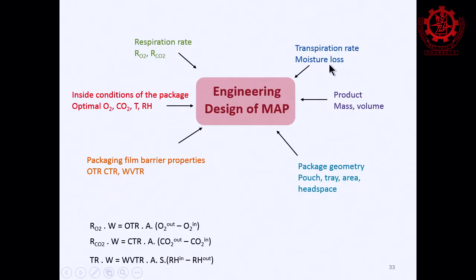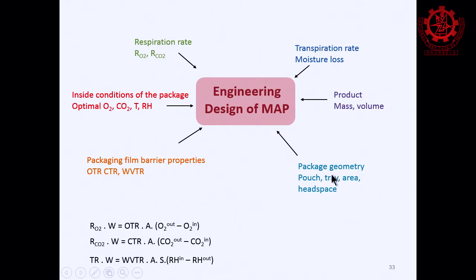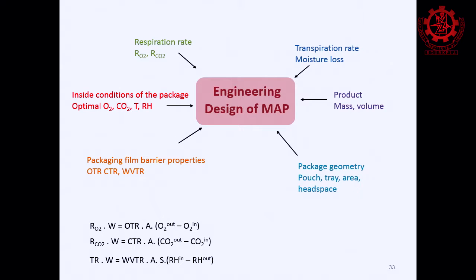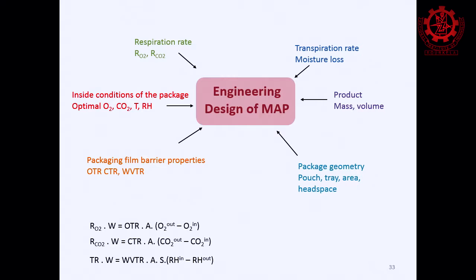You also need the headspace volume, since that's where the gas composition resides — enough volume for the fruit and some headspace to hold the modified gases. The optimal condition for a given fruit — in terms of O₂, CO₂, temperature, and RH — is found from literature. This information allows the complete engineering design of a MAP film.